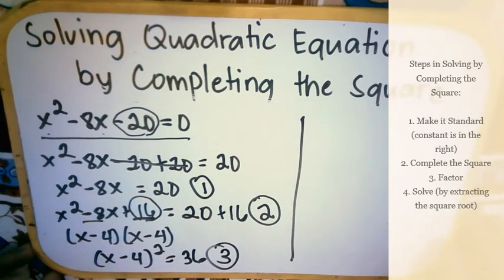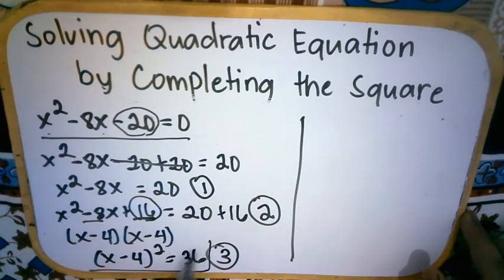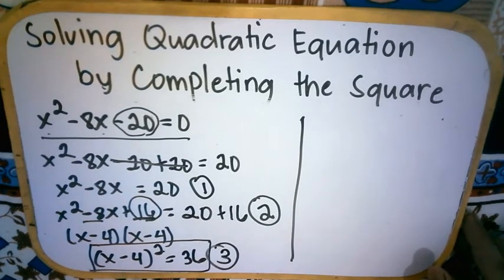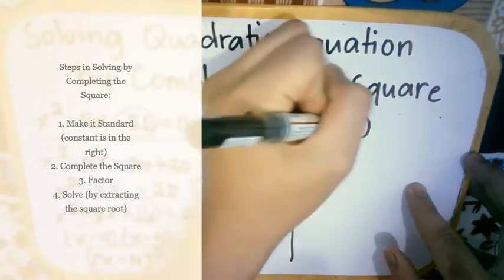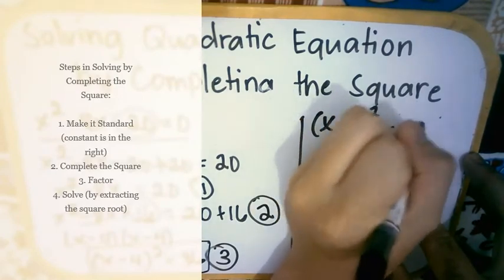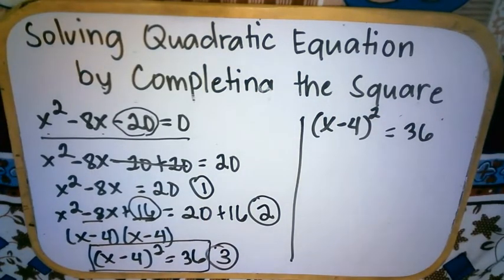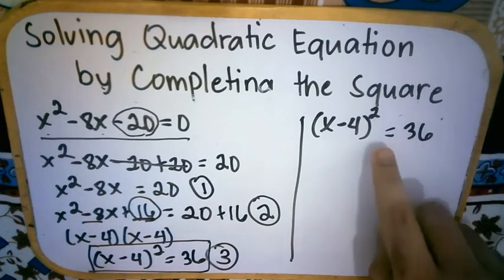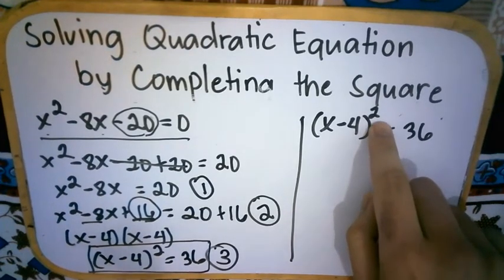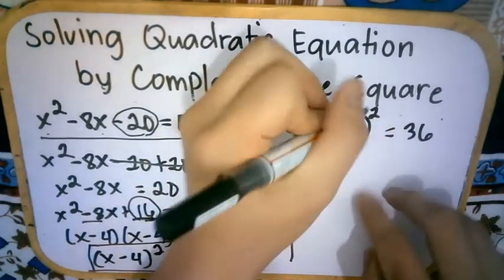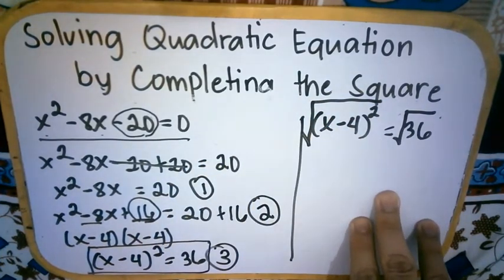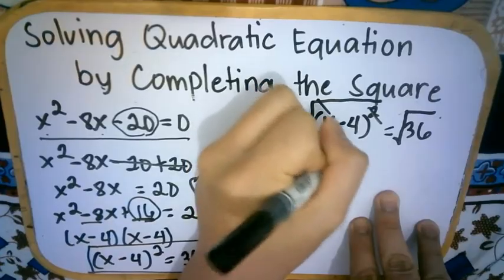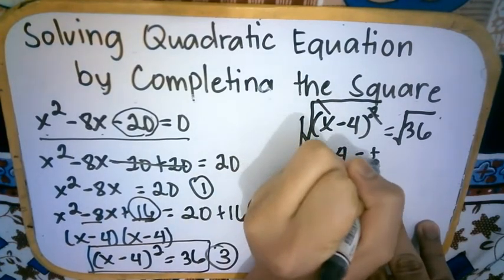The fourth step is to solve. This equation looks familiar — we can solve it by extracting the square root. Rewrite: (x minus 4) squared equals 36. The farthest number from the variable is the exponent 2, not 36. So to remove the exponent, get the square root of both sides. Cancel, and we have x minus 4 equals positive or negative 6.